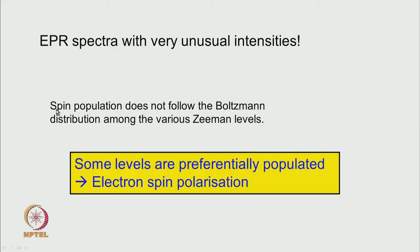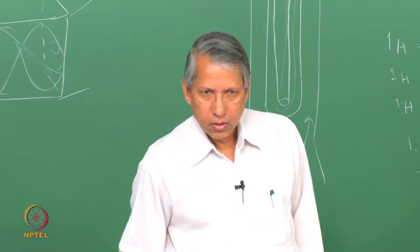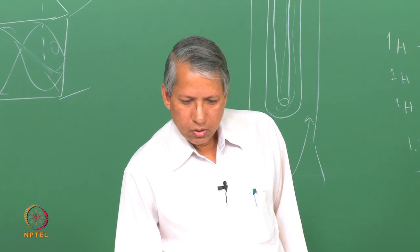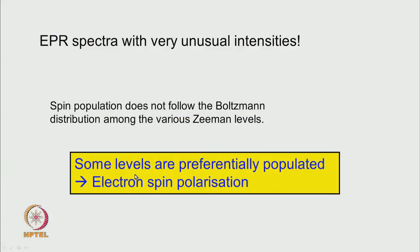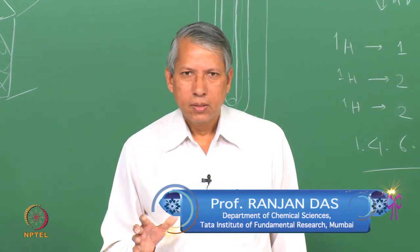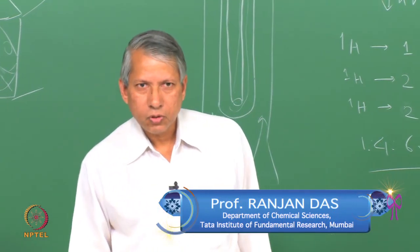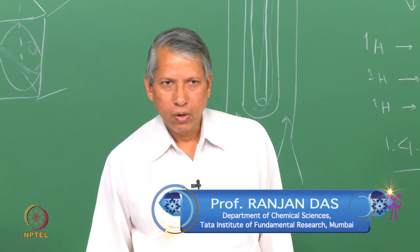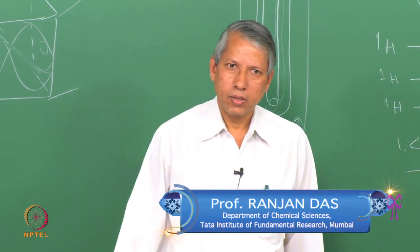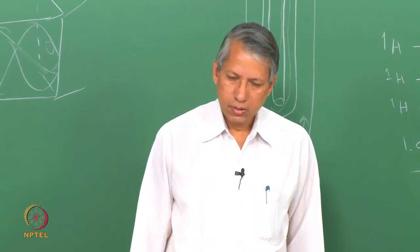This indicates that the spin population does not follow the Boltzmann distribution — which would ensure the lower level is more populated than the higher level. This phenomenon, where things are quite different from the Boltzmann expectation, is called electron spin polarization. We simply note here that it is possible to detect this phenomenon; understanding why it occurs will be taken up in a subsequent lecture.